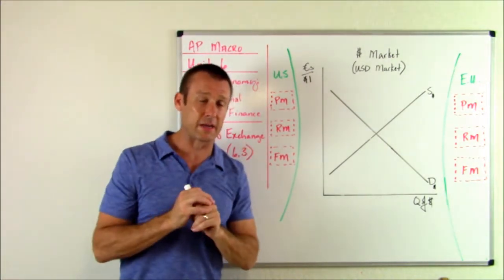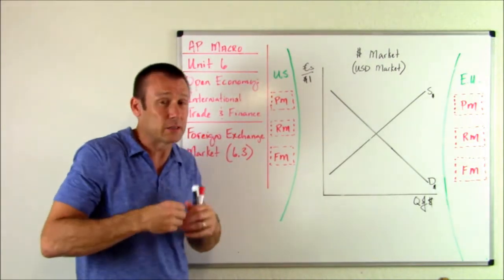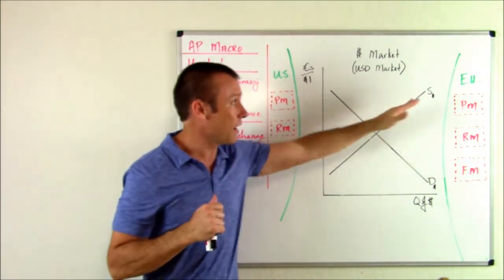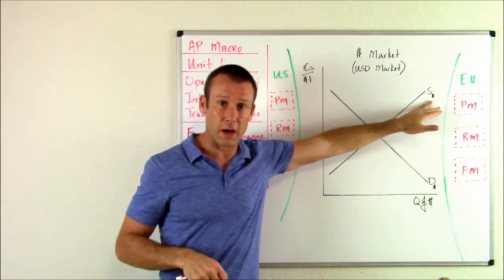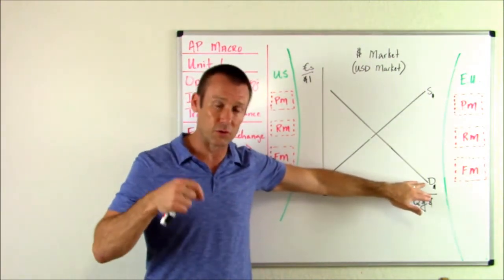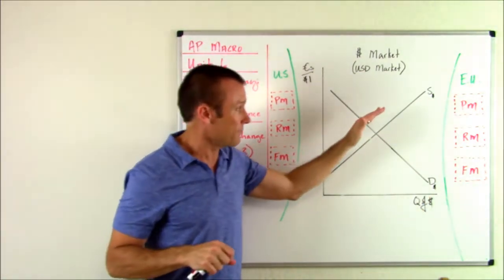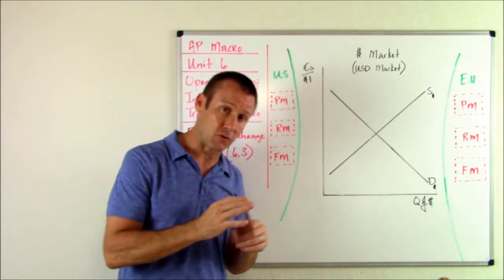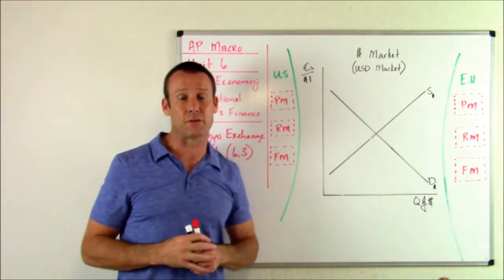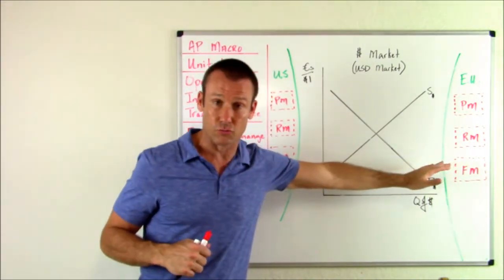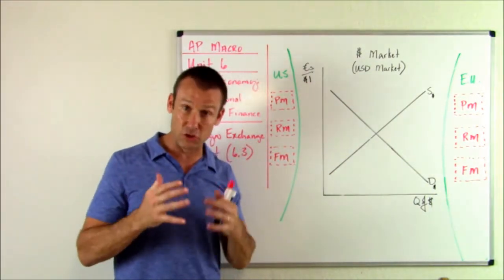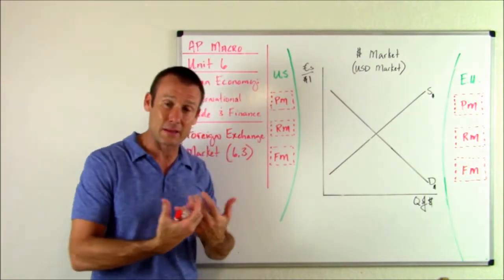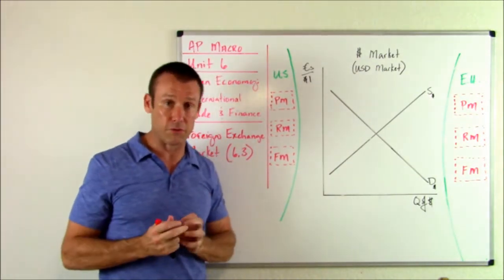Here's an important truism: the dollar market in terms of euros is really just the euro market in terms of dollars — we just flip things. The supplier of dollars is the demander of euros, and the demander of dollars is the supplier of euros. If you shift the supply of dollars to the right, you also shift the demand for euros to the right. If demand for dollars increases, that means more euros are being supplied — the only way people can demand more dollars is to supply more euros.